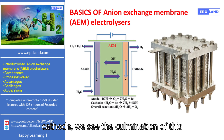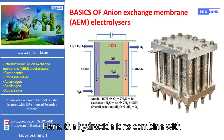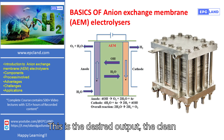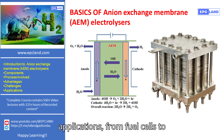At the cathode, we see the culmination of this process with hydrogen production. Here, the hydroxide ions combine with electrons to form hydrogen gas. This is the desired output — the clean hydrogen that is so valuable in various applications, from fuel cells to industrial processes.